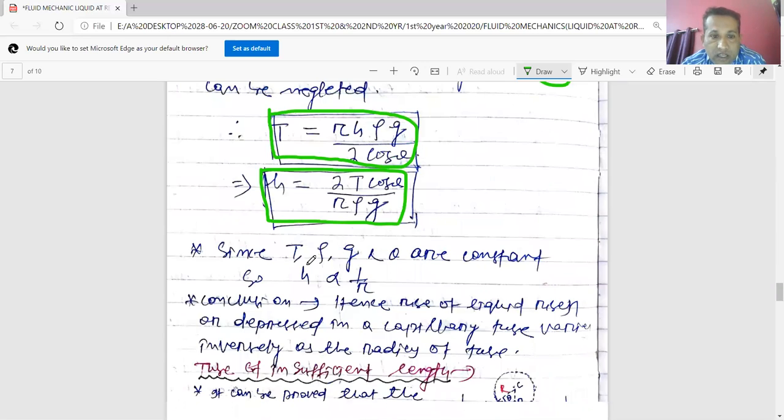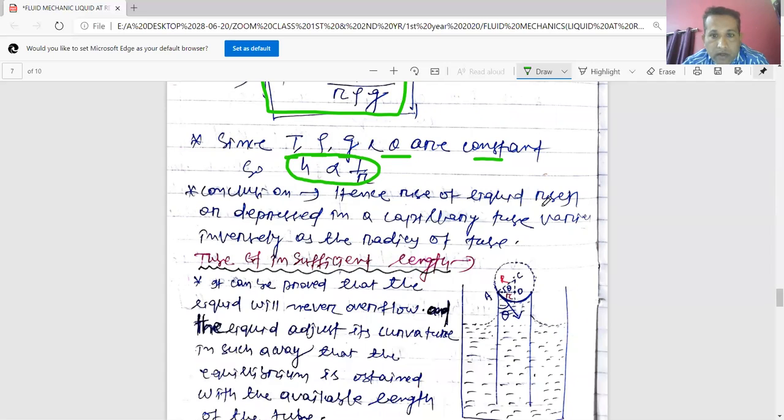Since T, which is surface tension, ρ density, g acceleration, and θ are constant, so h is proportional to 1/r. Conclusion: Hence, rise of liquid in a capillary tube varies inversely as the radius of the tube.